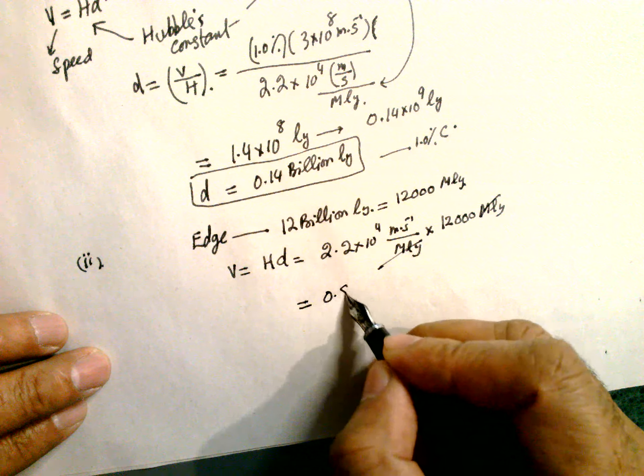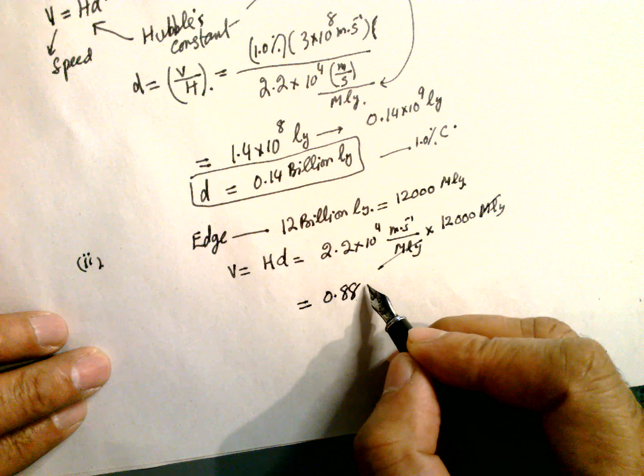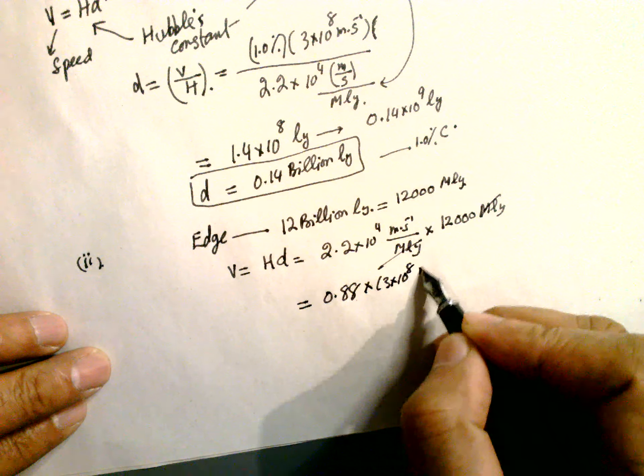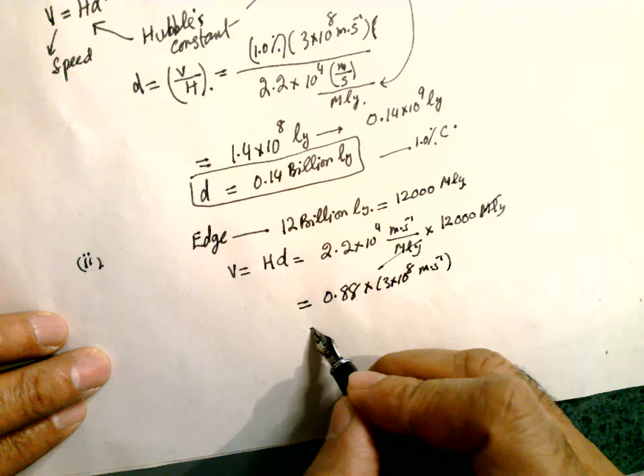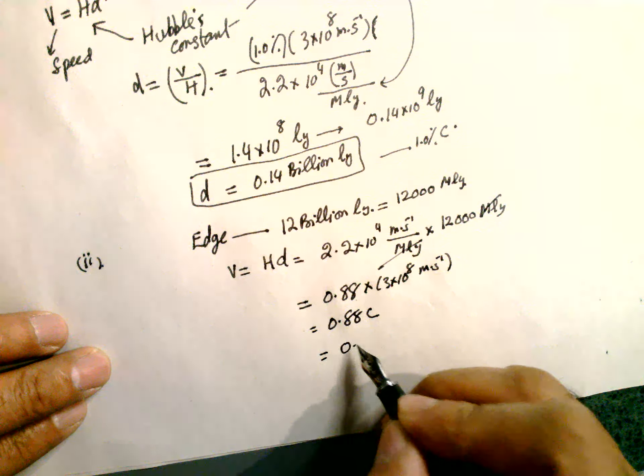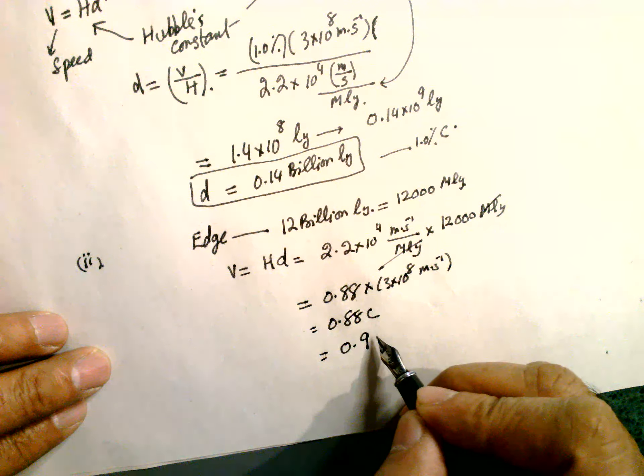This gives us 0.88×3×10^8 meters per second, which equals 0.88C, or approximately 0.9C.